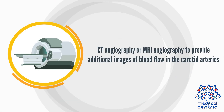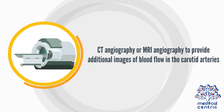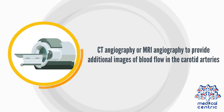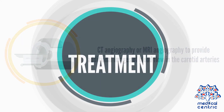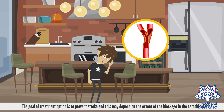CT angiography or MRI angiography may be used to provide additional images of blood flow in the carotid arteries. The goal of treatment is to prevent stroke, and the treatment option may depend on the extent of the blockage in the carotid arteries.